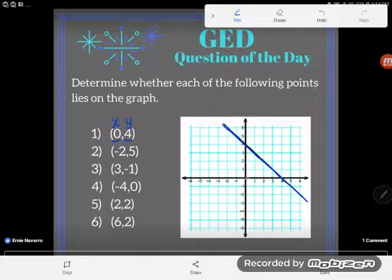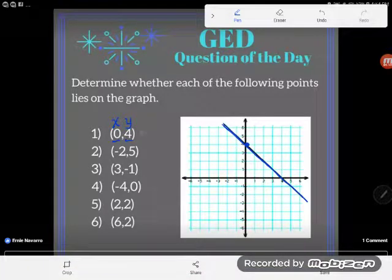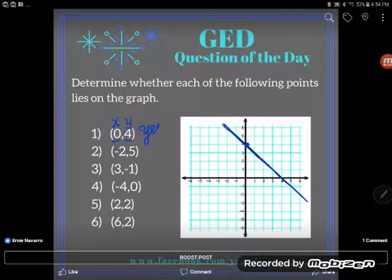But I do have vertical movement of 1, 2, 3, 4. And I can see that this point definitely falls on this line. So is number 1 on the graph? Yes, it is.